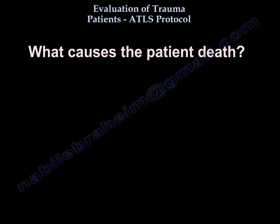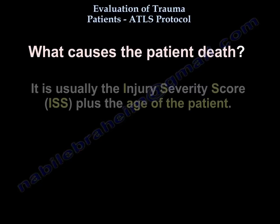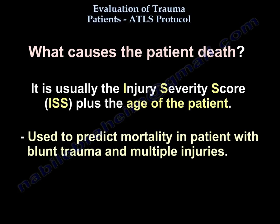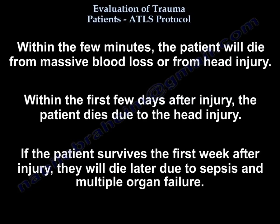What causes patient death? The ISS score plus the age of the patient is used to predict mortality in patients with blunt trauma and multiple injuries. In the first few minutes, patients die from massive blood loss or head injury. In the first few days, patients die from head injury. If the patient survives the first week of injury, they may die later from sepsis and multiple organ failure.